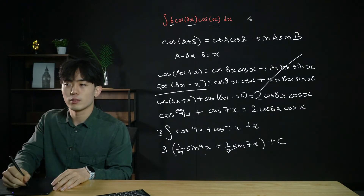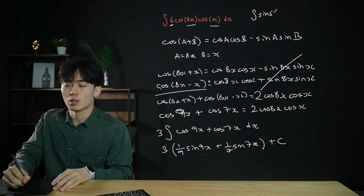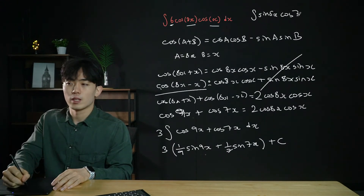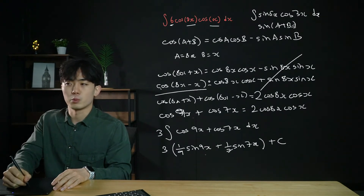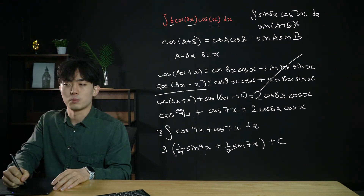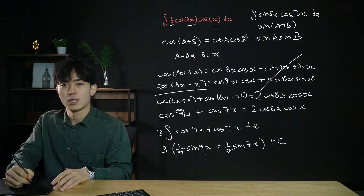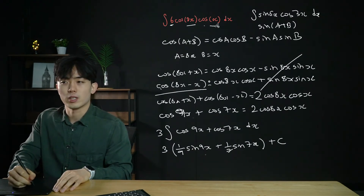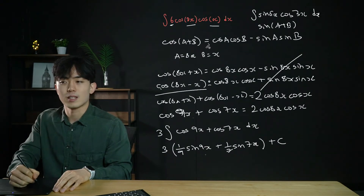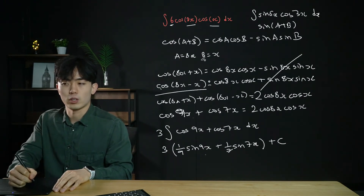If given something like sin(5x)cos(3x), we'd have to use the sin(a + b) compound angle formula. The order of the trig terms is very important: if we have sin times cos we use the sin(a + b) formula, whereas for cos times cos we use the cos(a + b) formula. Use the right compound angle formula accordingly.